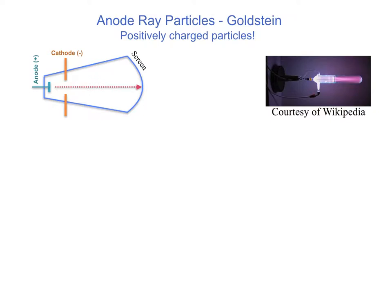When a sufficiently high electric field is applied between the anode and the cathode, the gas atoms are ionized — meaning they are stripped of their electrons. Now you have electrons and positively charged ions. The electric field accelerates the ions so they attain a certain velocity, and they travel in straight lines toward the screen, casting shadows just like the cathode ray particles did.